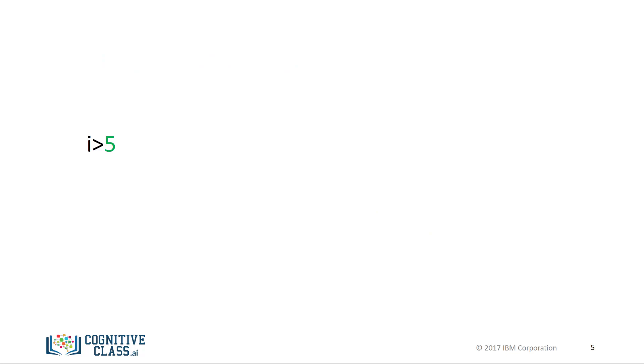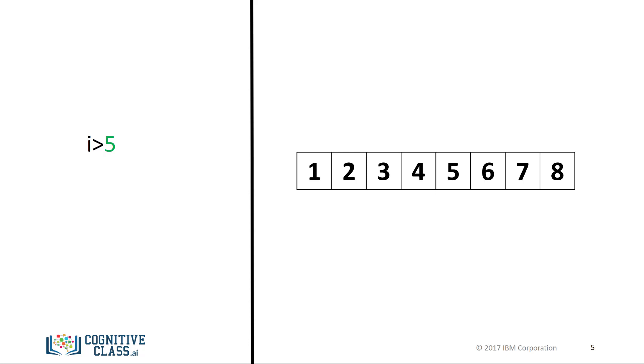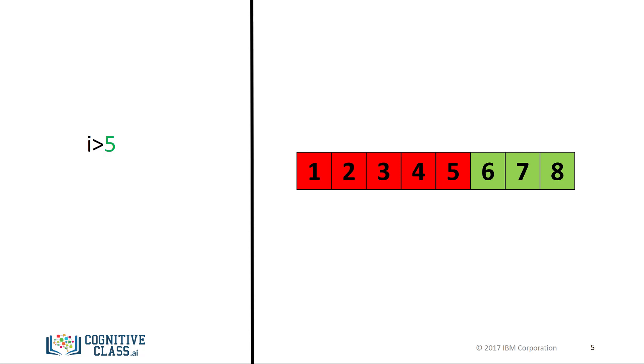Consider the following equality comparison operator. If the value of the left operand — in this case the variable i — is greater than the value of the right operand, in this case 5, the condition becomes true, or else we get a false. Let's display some values for i on the left, showing values greater than 5 in green and the rest in red. If we set i equal to 6, we see that 6 is larger than 5, and as a result we get a true.